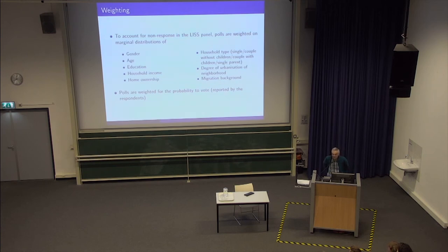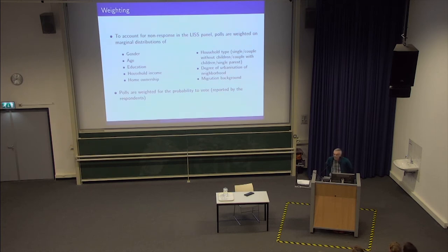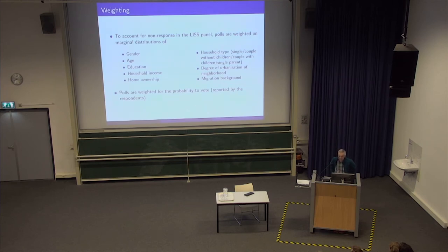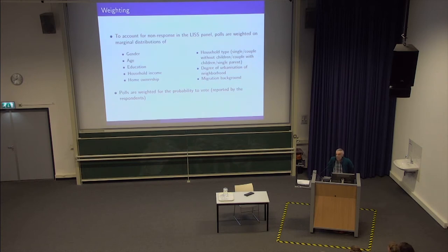The panel is not perfect; some people don't participate in every survey. We correct for that using weights, as most panels do, based on basic characteristics. A nice feature of the LISS panel is that we know a lot of background information on all participants — age, education, income, whether they own or rent, migration background, etc. We also know how these variables are distributed in the complete Dutch adult population, so we can correct for non-response using weights.